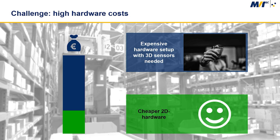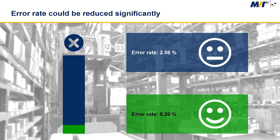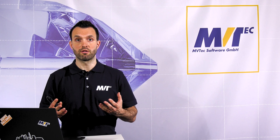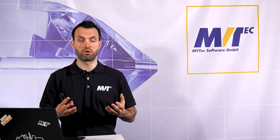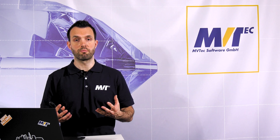Using deep learning, however, it was possible to use 2D images only. This resulted in a significant cost reduction due to cheaper hardware. Besides saving money thanks to cheaper hardware, the deep learning solution based on 2D images also reduced the error rate from about 2.5% in the traditional approach to only 0.3%.